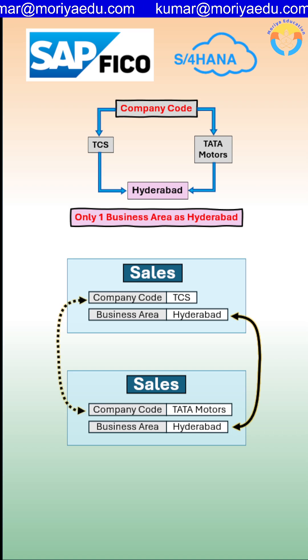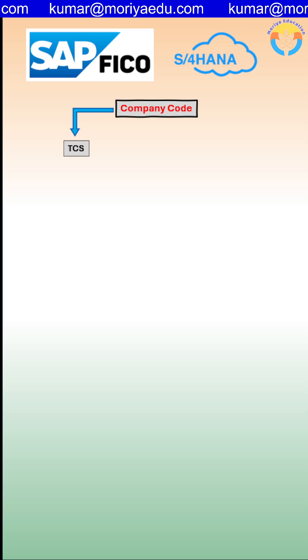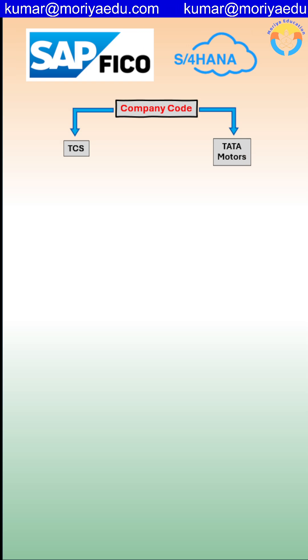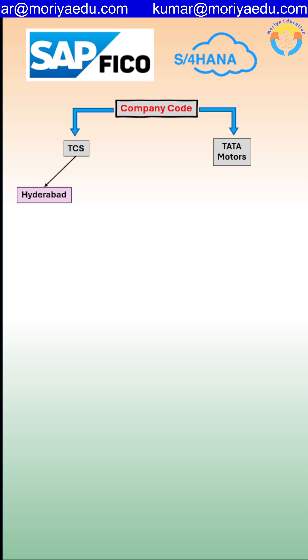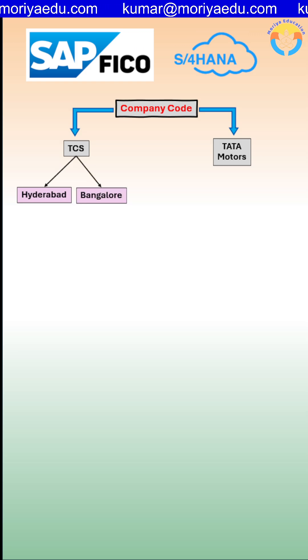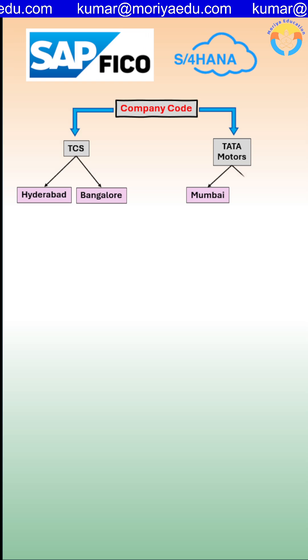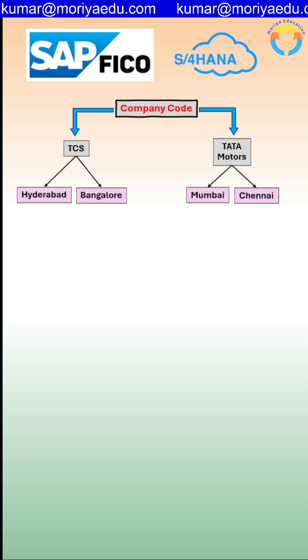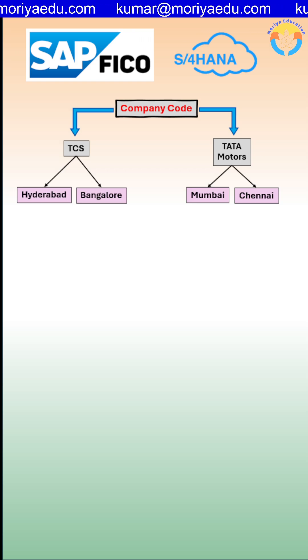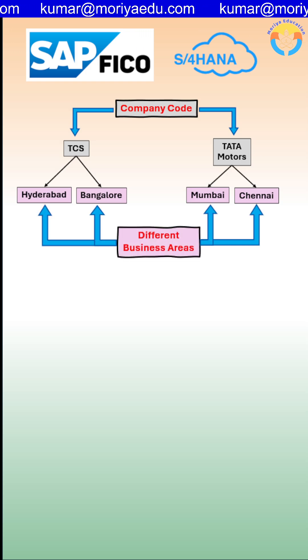Let us understand another type of organizational structure now. In the same way, we have two company codes TCS and Tata Motors. Here, TCS has its branch in Hyderabad and Bangalore, and Tata Motors has its branch in Mumbai and Chennai. So here, we have different branches for different company codes at different geographical locations. At this point of time, we will be creating different business areas for different branches.